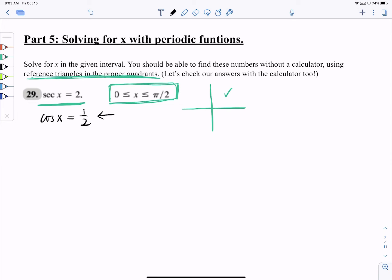Well, draw the triangle, and the hypotenuse is 1/2. So it's going to be x equals π/3 only. And you understand why it's only, because it's only in the first quadrant.